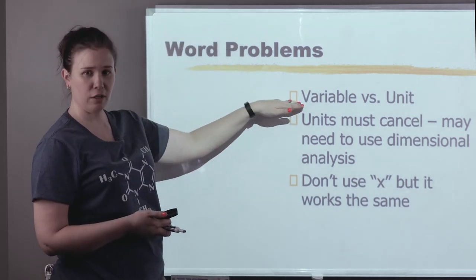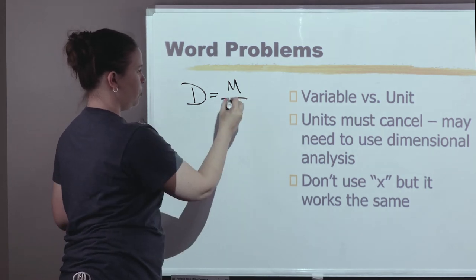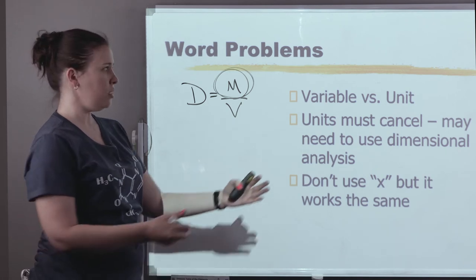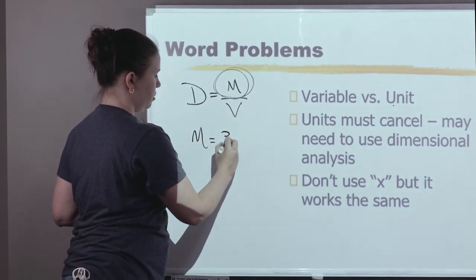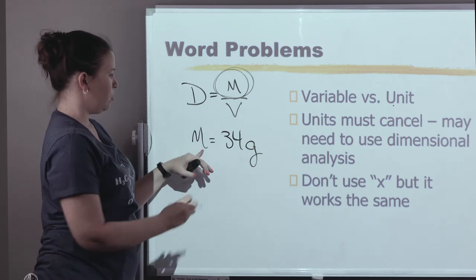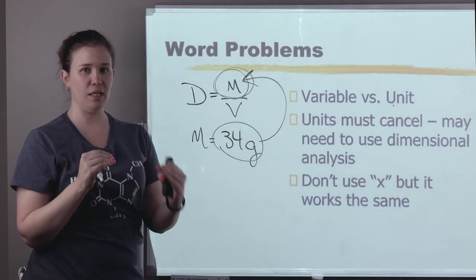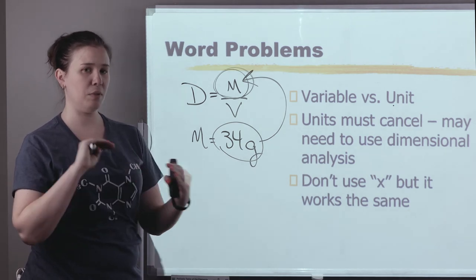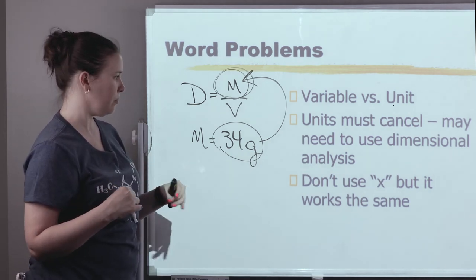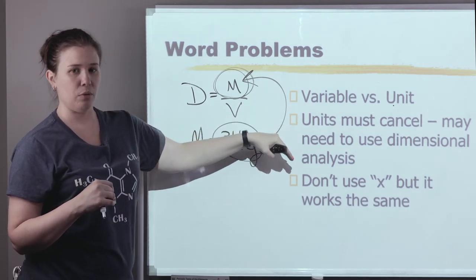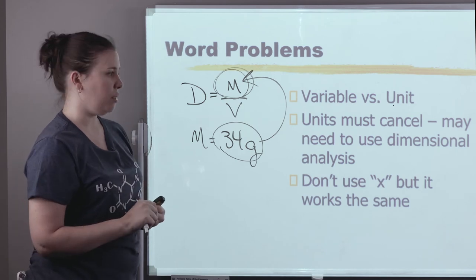The first thing I want to talk about is the difference between a variable and a unit. Let's talk about a formula we've used already: density equals mass over volume. The unit for mass is not 'm' — it's grams. So we could say the mass of something is 34 grams, and we'd be plugging in 34 grams for the letter m in the formula. Make sure you're not confusing variables and units. You're also going to have lots of different units, so remember if the units don't cancel, you might need dimensional analysis — converting, for example, milliliter to liter so the units can cancel.